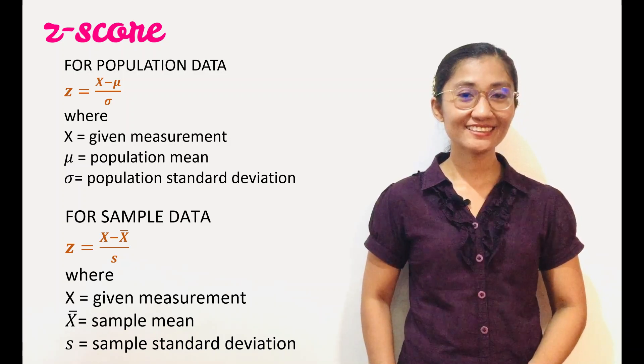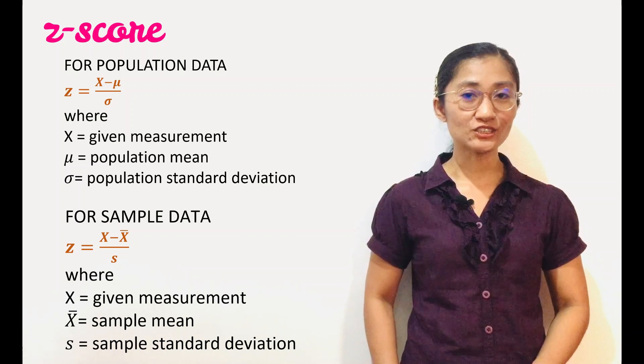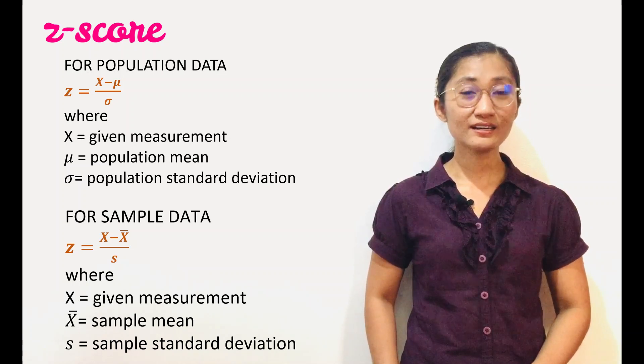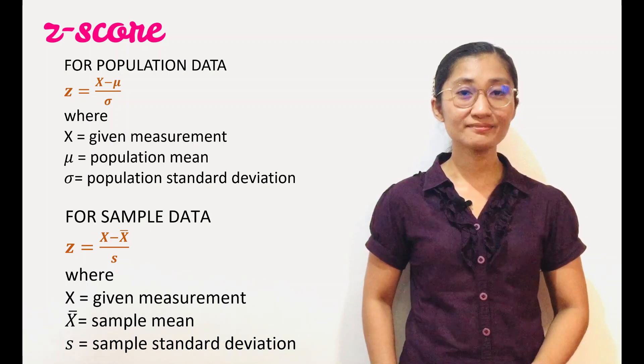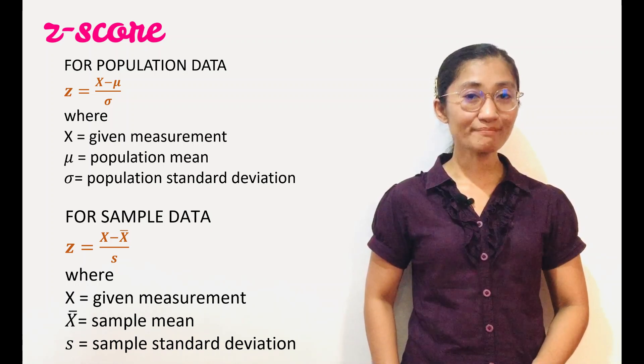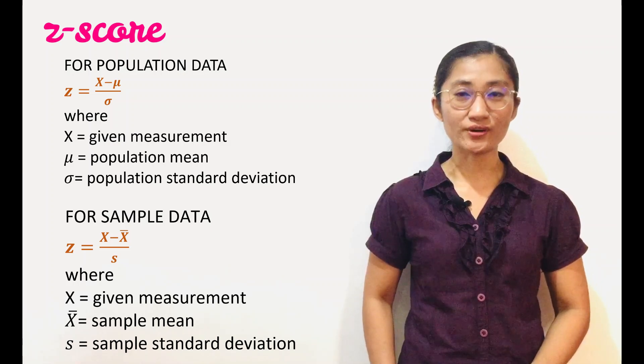Where x is the given measurement, mu the population mean, sigma the population standard deviation, x-bar the sample mean, s the sample standard deviation, and Z is the Z-score.